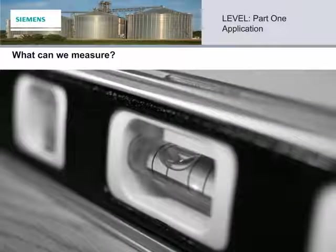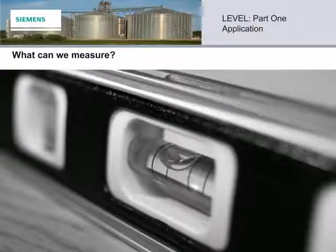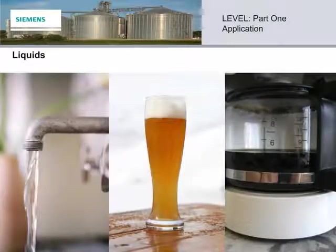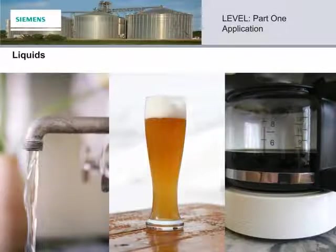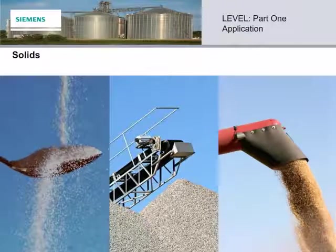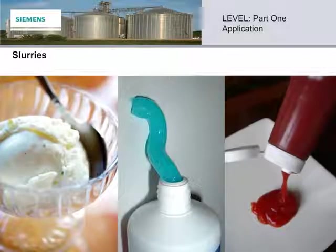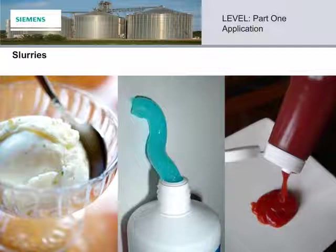Opportunities for level measurement are everywhere, and Siemens has the technology to measure level on lots of different materials, from liquids to solids to slurries. Liquids generally have a flat surface to measure, as their viscosity and gravity even it out. Solids present a different surface and generally pile at an angle to a peak. And then there are slurries — the in-between that can lie flat or peak depending on their gooey factor.